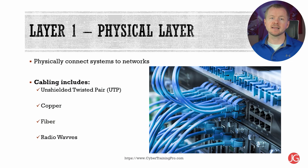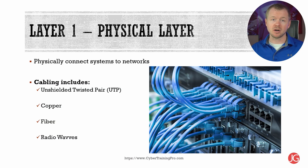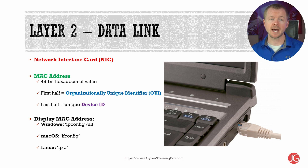Layer one moves the data across the network from the network interface card or NIC on your computer to our destination. Data at layer one is transferred as binary, meaning ones and zeros, and basically the ones have an electric charge and the zeros don't. The network interface card is where that network cable actually plugs into your system, and it's important because it has a layer two address, which we call the media access control address or the MAC address, and that's unique to that specific card.